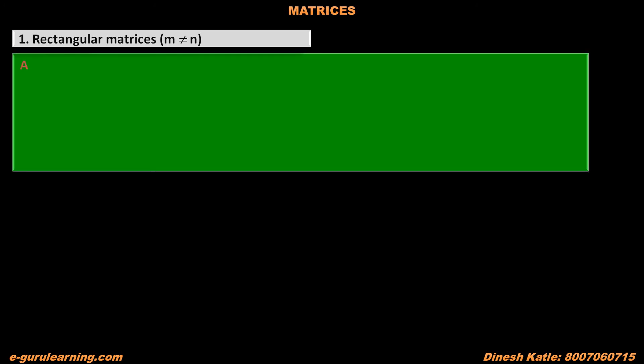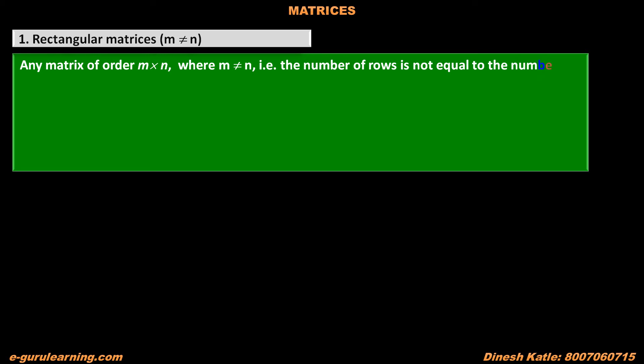First, we have to learn about rectangular matrices. When the number of rows M is not equal to the number of columns N, any matrix of order M into N where M is not equal to N — that is, the number of rows is not equal to the number of columns — is called a rectangular matrix.